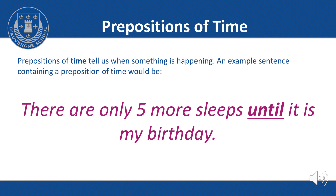Prepositions of time tell us when something is happening. For example: until, during, after, before. Or it could be more specifically, such as on Christmas Day, at 12 o'clock, in August. An example sentence containing a preposition of time would be: There are only five more sleeps until it is my birthday. So simply, the prepositions of time tells us when something is happening.